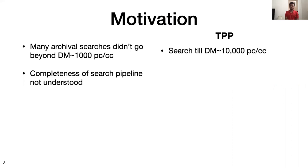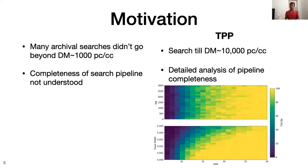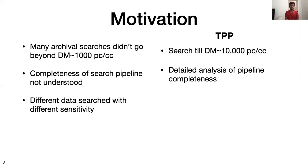We have developed tools, metrics, and visualizations to understand the completeness of our search. For example, in this case the y-axis shows DM and pulse width, while the x-axis shows SNR. The color here represents the percentage of FRBs which were recovered, giving us an idea of the completeness of the pipeline with respect to different search parameters. Also, previously different data has been searched differently and with different sensitivities, which creates issues when trying to combine these different datasets to calculate a unified rate for all the FRBs.